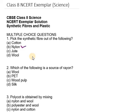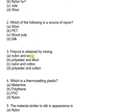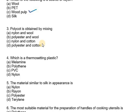Which of the following is a source of rayon? Rayon is actually produced from natural cellulose like wood pulp. So the source of rayon is wood pulp.